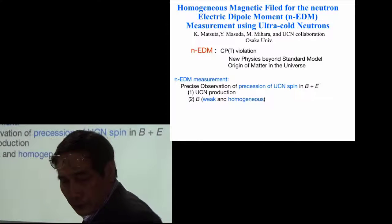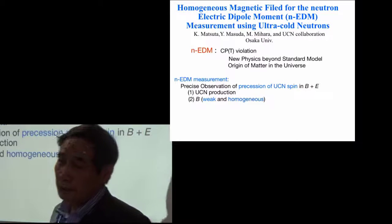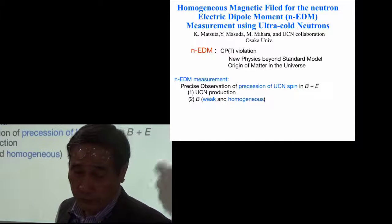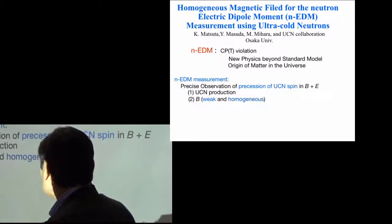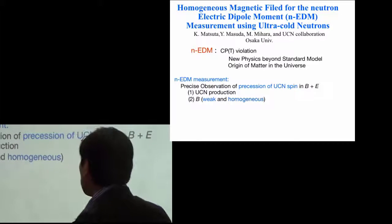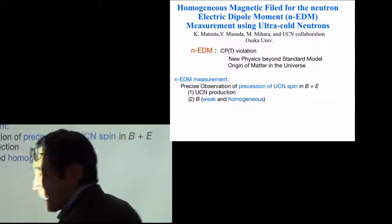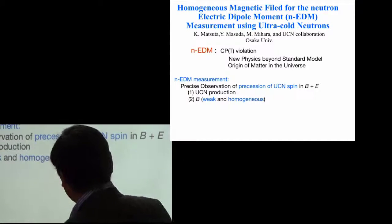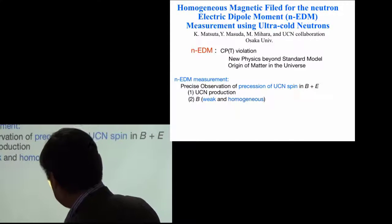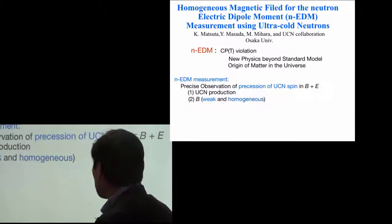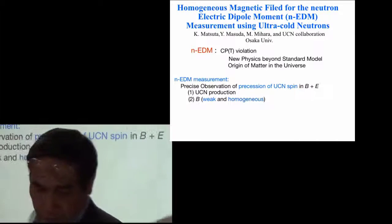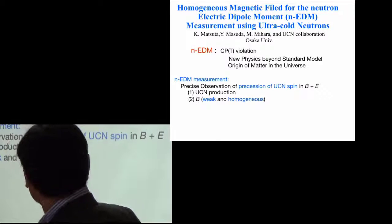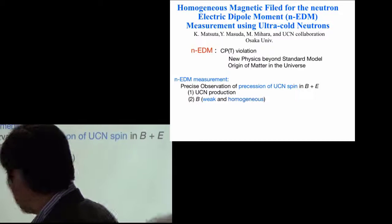The EDM measurement needs precise observation of precession of neutron spin in controlled magnetic and electric field, so it is important to have ultra-cold neutron, intense ultra-cold neutron. And then it is also important to have very precise magnetic field, weak but very homogeneous.